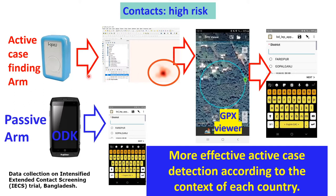Once we download the data and map it using Quantum GIS, which is open source software, we can develop a buffer around households at high risk. Using another GPS app called GPX Viewer, we can see whether we are visiting all the households within the buffer where there is high risk of transmission. We then go door-to-door, examine all contacts of new leprosy patients, and collect screening results using ODK, an open source app for data collection. In this way, we intend to improve the effectiveness of active case detection and adapt our strategy to the reality of the country.